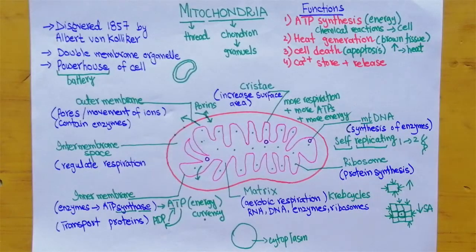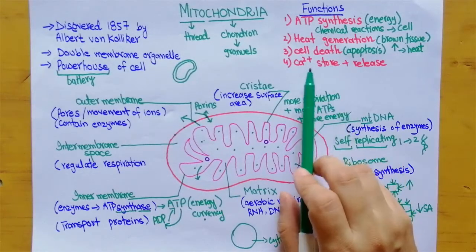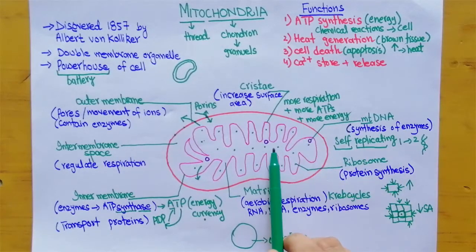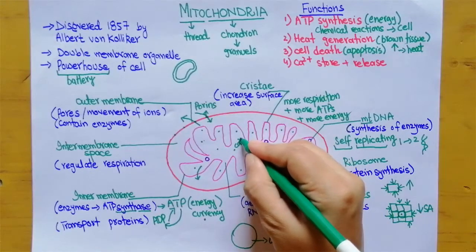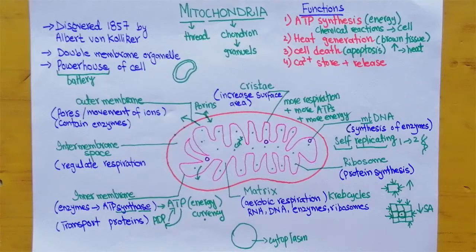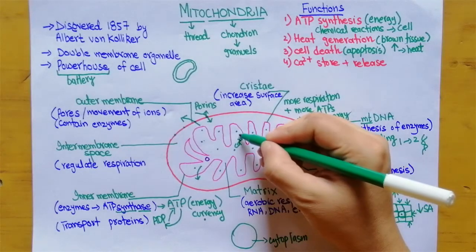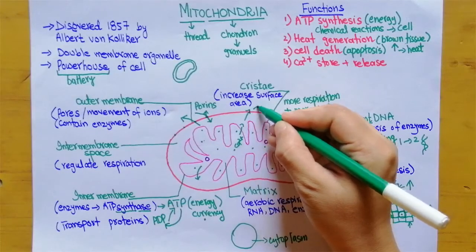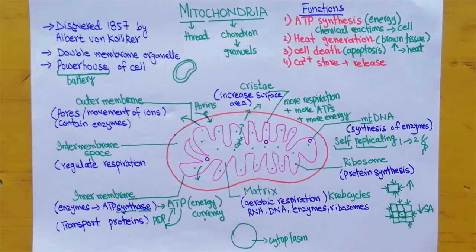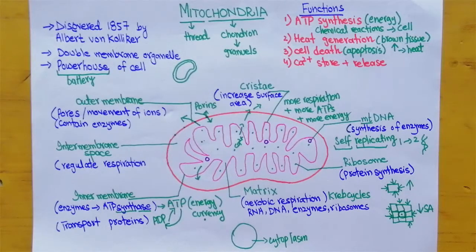The last function of mitochondria is storing and releasing calcium ions. Calcium ions are stored inside the mitochondria and released into the cytoplasm when the cell needs them. That was all about the structure and function of mitochondria. If you liked this lesson, give it a thumbs up, subscribe to the channel, hit the bell icon, and leave any suggestions or comments below.